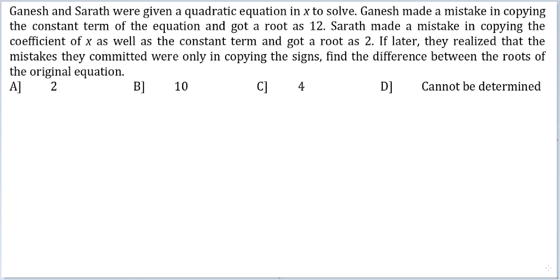Let's look at this question. Ganesh and Sharath were given a quadratic equation in x to solve. Ganesh made a mistake in copying the constant term of the equation and got a root is 12. Sharath made a mistake in copying the coefficient of x as well as constant term and got a root is 2. If later they realized that the mistakes they committed were only in copying the signs, find the difference between the roots of the original equation.